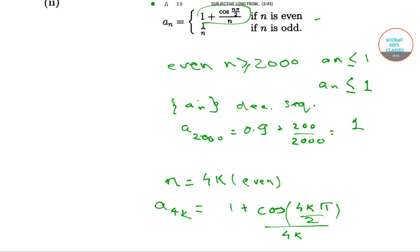Which is equal to 1 plus 1 by 4K, cos 2K pi, which equals 1 plus 1 by 4K, since cos 2K pi equals 1. Now, we know that 1 plus 1 by 4K is definitely greater than 1.